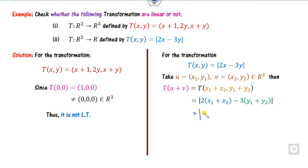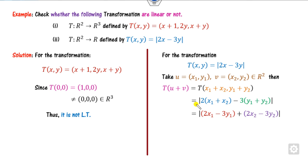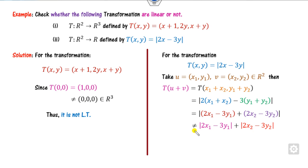Writing the first pair: 2x₁ minus 3y₁ plus 2x₂ minus 3y₂. Now, the value of |x + y| is always less than or equal to |x| plus |y|; it can never be equality.